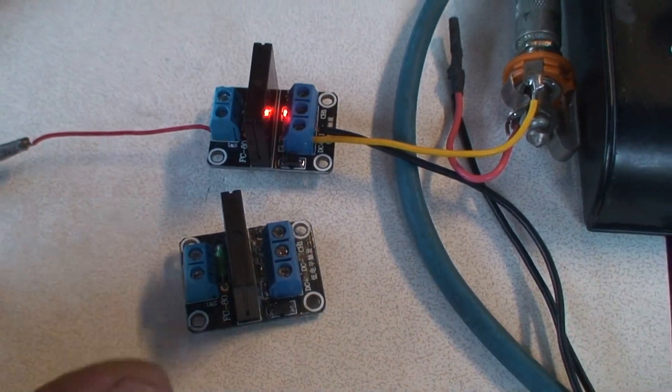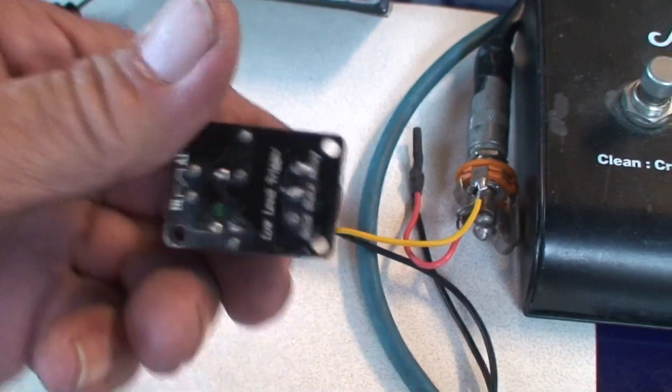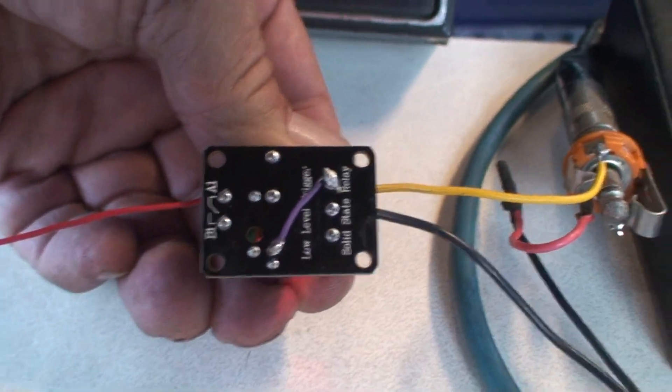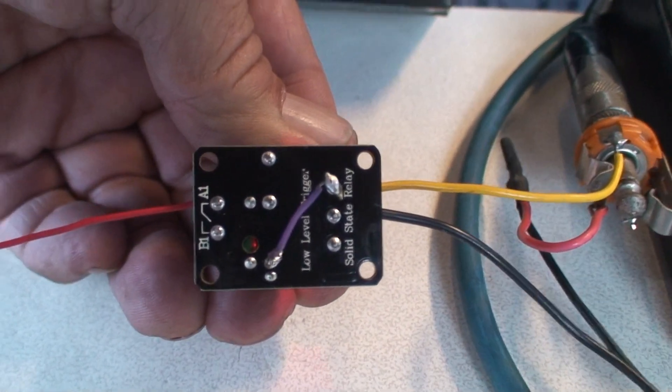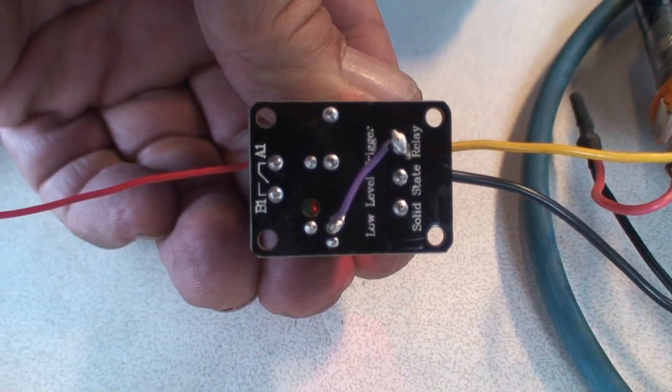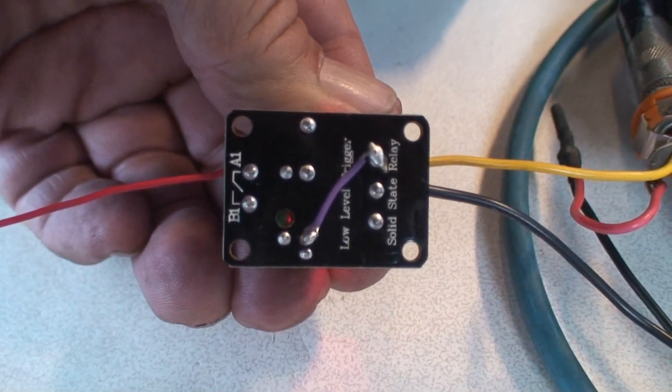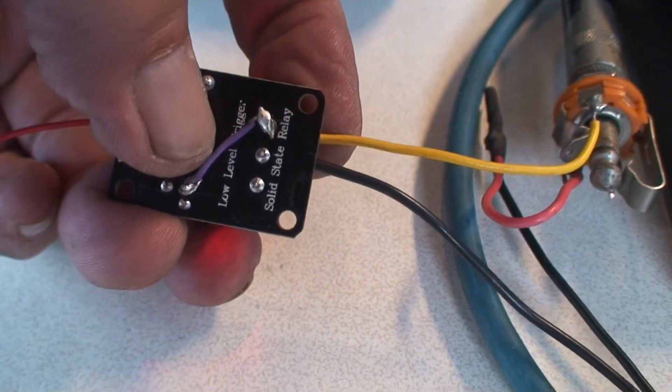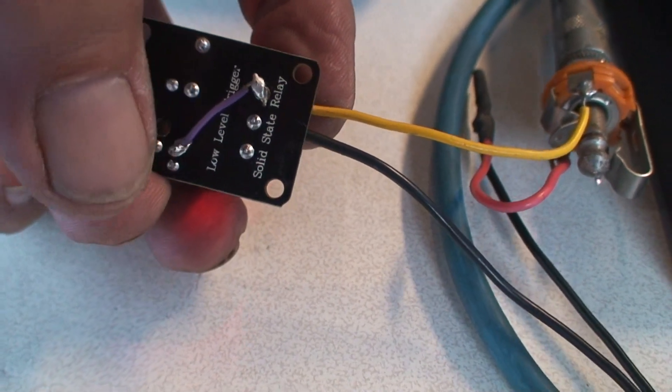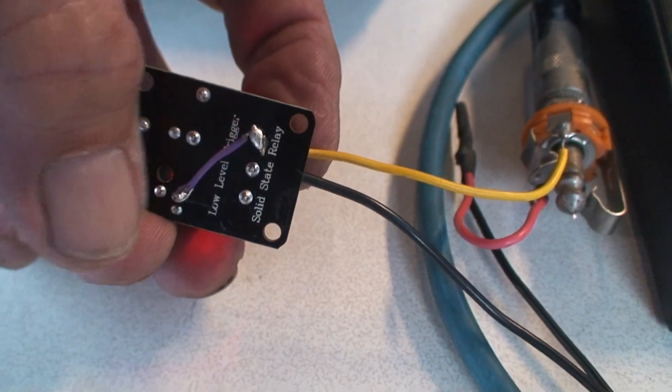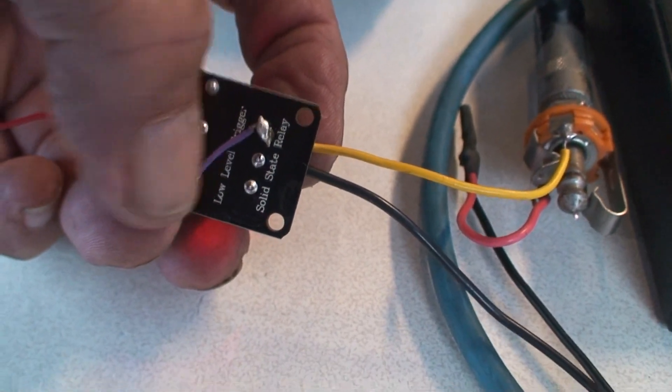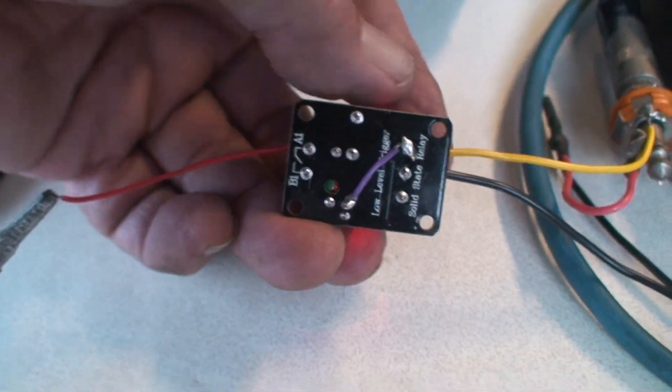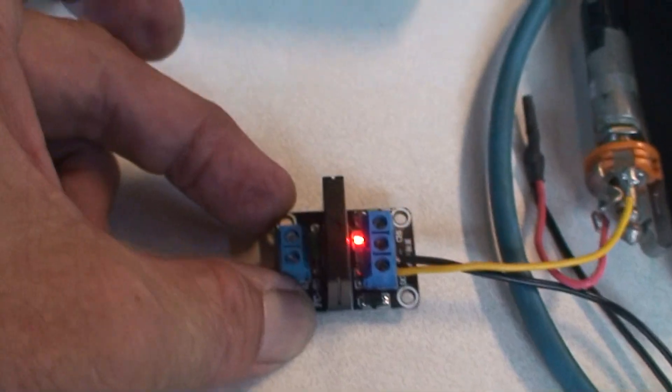This one I didn't jumper; this one's jumpered as you can see. It's jumpered from the DC positive to the second terminal in from the left. The other two up here are continuous with those two, so these two are the DC input, these two are the AC switched. That's it, simple enough. Good luck.